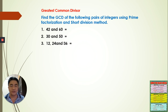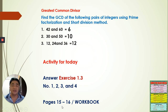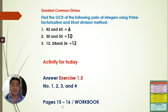We also have an activity for today using your workbook. I have given already the answer, so try to figure out the solution — show me the prime factorization and the short division method. Answer exercise 1.3, numbers 1 through 4, on pages 15 to 16. When you come to report to school next week, I will check your book. Do you have any clarification about finding the greatest common factor? That's all for today — see you again next time. Bye-bye.